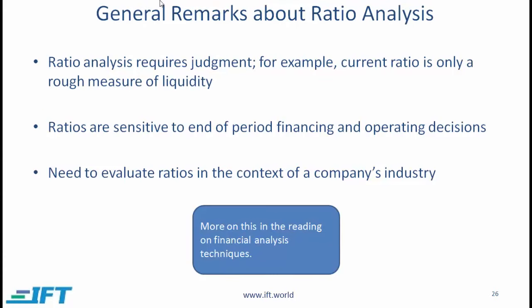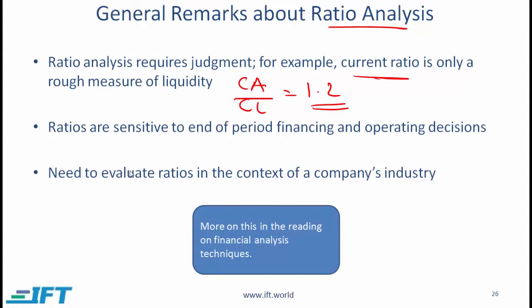A few general remarks about ratio analysis. Ratio analysis requires judgment. For example, the current ratio is only a rough measure of liquidity — you might get current assets over current liabilities equal to 1.2 and naively conclude you have enough assets to cover liabilities, but on deeper analysis you might realize that both inventory and accounts receivable are not very liquid. You need to evaluate ratios in the context of the company's industry and its particular situation.